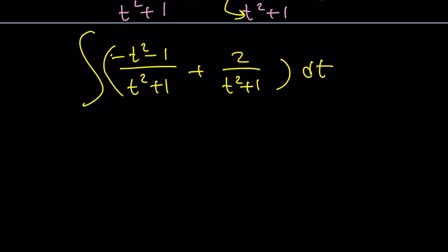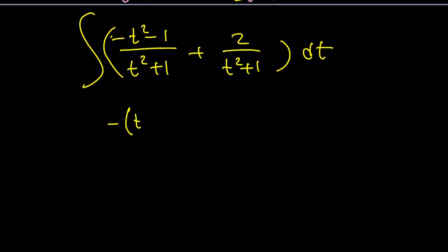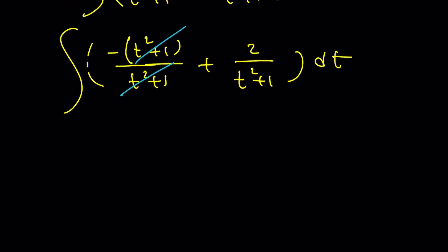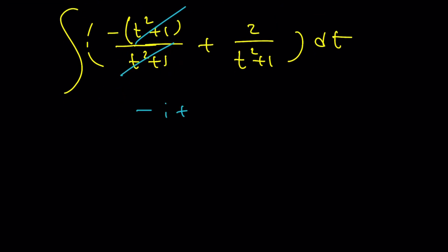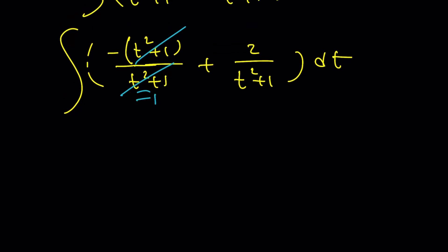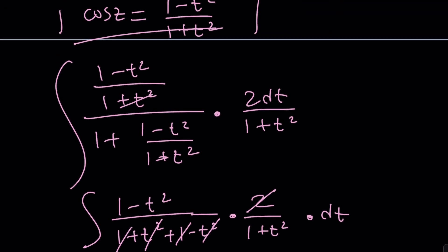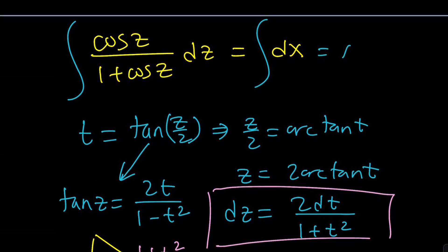Notice that the first fraction simplifies since negative t squared minus 1 is the opposite of t squared plus 1, so t squared plus 1 cancels and we get negative 1. So the integral becomes negative 1 plus 2 over t squared plus 1, all dt. Integrating: the integral of negative 1 is negative t, and the integral of 2 over t squared plus 1 is 2 arctan t. This equals x plus c, since we were integrating dx on the right-hand side.